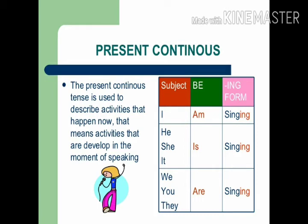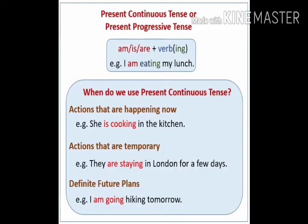Now we will see present continuous tense. The present continuous tense is used to describe activities that happen now — that means activities that are developing at the moment of speaking. With 'I', we use 'am' plus verb-ing. He, she, it are singular, so we use 'is' plus verb-ing. 'We', 'you', 'they' are plural, so we use 'are' plus verb-ing. So in the present continuous tense, we use am/is/are plus verb-ing: 'am' with 'I', 'is' with singular, and 'are' with plural.